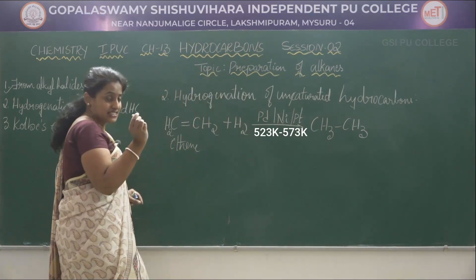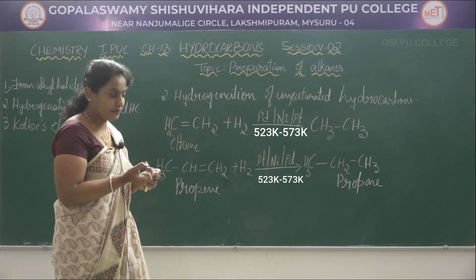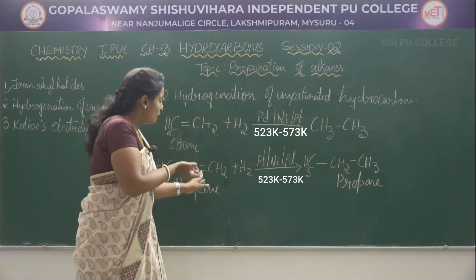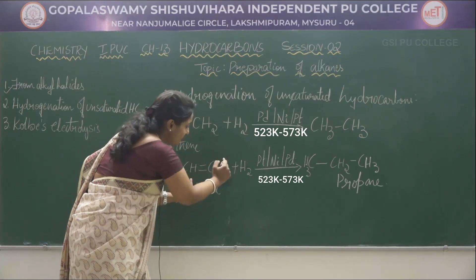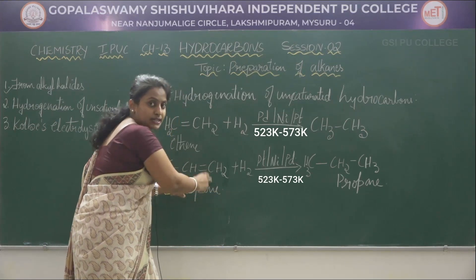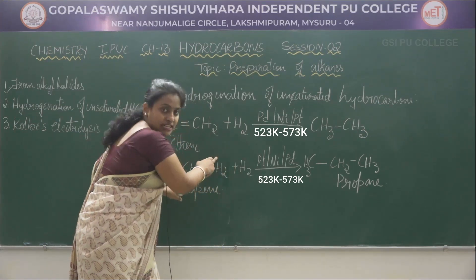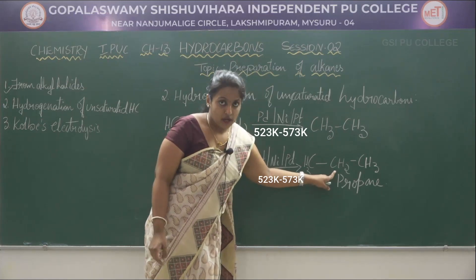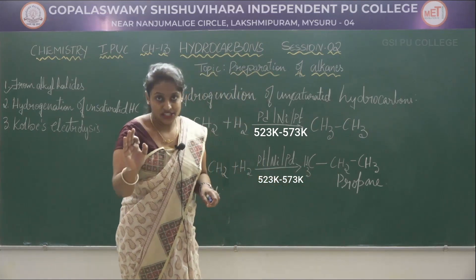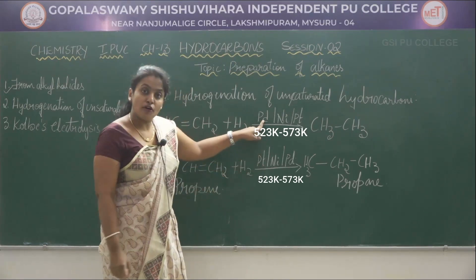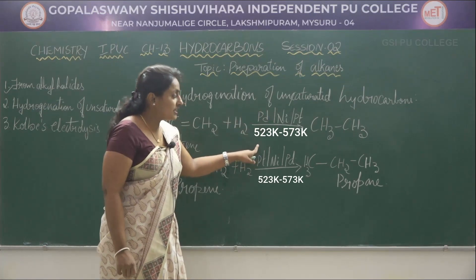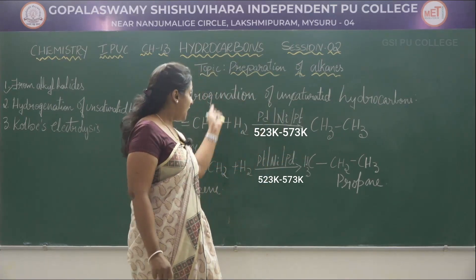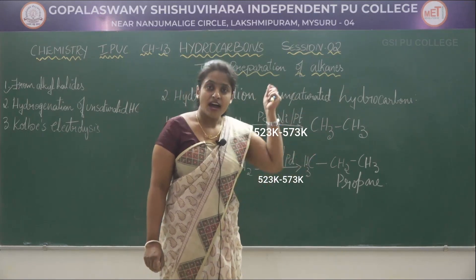Similarly, let us consider another alkene — propene. The addition of hydrogen is added; one of the double bonds is converted, leading to the formation of propane. This reaction should be carried out in the presence of a catalyst such as palladium, nickel, or platinum. One of these catalysts is used in order to convert alkenes to alkanes by the addition of hydrogen.